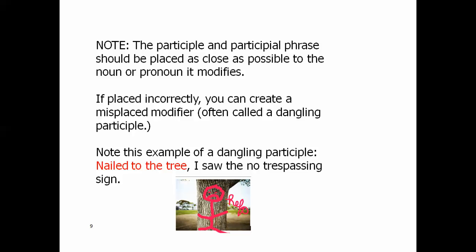If it's placed incorrectly, you can create a misplaced modifier, often called a dangling participle. Note this example of a dangling participle. Nailed to the tree, I saw the no trespassing sign. Obviously that could be very painful. Now the way that you would correct this would be to put the participial phrase, nailed to the tree, right after the word sign. Because that's what it modifies. I saw the no trespassing sign, nailed to the tree. So that time it makes sense, instead of I being nailed to the tree. The sign is nailed to the tree.